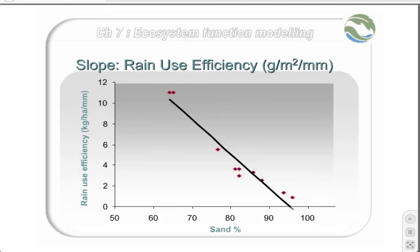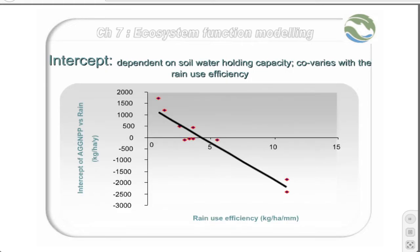The linear grass production versus rainfall relationship has two parameters, a slope and an intercept. The slope is called the rain use efficiency. It is approximately inversely linearly related to the sand content of the soil. Mechanistically, it is probably more correct to say that it is directly and linearly related to the clay plus silt content of the soil, and the relationship shown above follows from the fact that sand plus silt plus clay equals 100%.